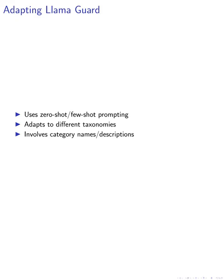We also discuss how LlamaGuard can be adapted to different taxonomies and guidelines using zero-shot or few-shot prompting. Zero-shot prompting involves using category names or category names with descriptions from the target domain in the prompt at inference time. Few-shot prompting includes two to four examples for each category in the prompt, without training on these examples.